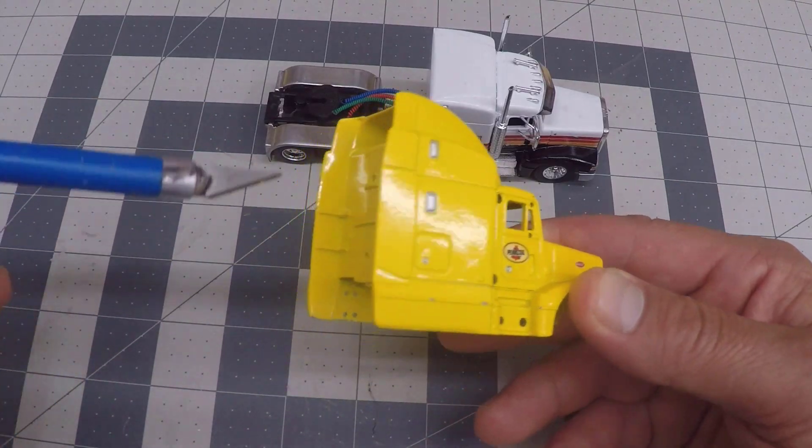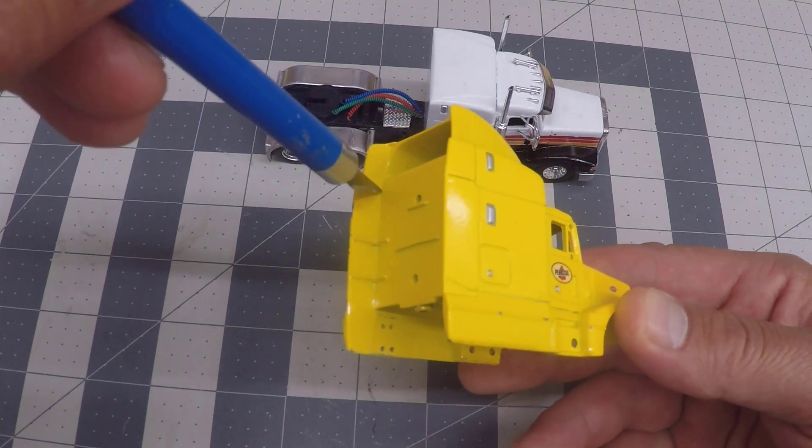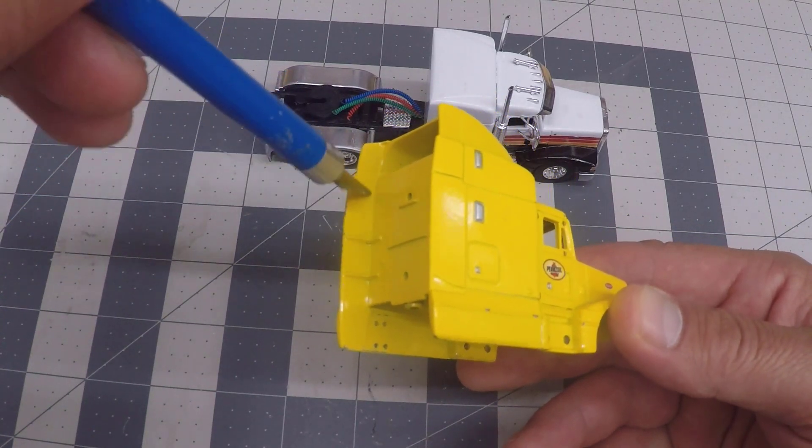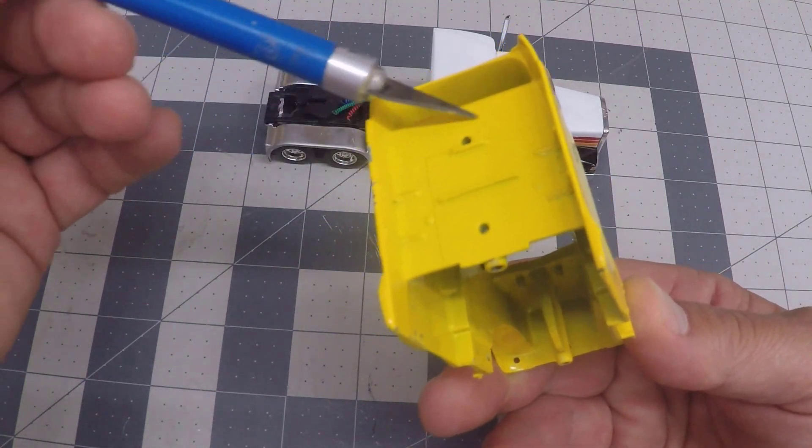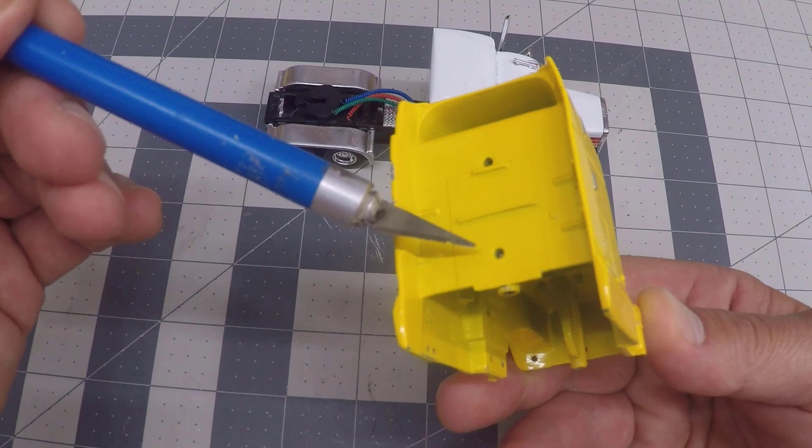The hard work begins by taking a saw of some kind and cutting off these skirts on the back side of the cab. So these were cut off, and then the entire cab was sanded smooth, and then these two holes filled in.